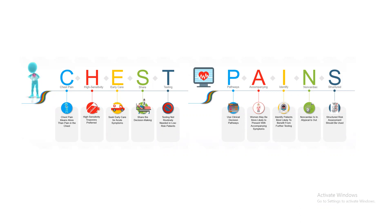The second point is when you evaluate chest pain, what to do: the algorithms and the clinical decision pathways, the CDPs. The third point is giving priority to the patient. For example, the S here is 'share the decision-making' — share with the patient, educate the patient, educate the general public. These algorithms not only tell physicians what to do, but also tell them to engage patients in the decision-making process.